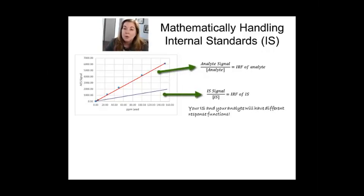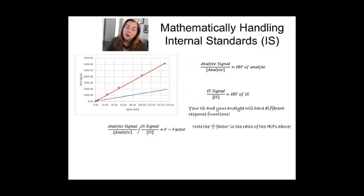Now, if you divide both of these equations, any one equation divided by another is going to also give you a true equality. You're going to get something like this. And what you can see is on the right hand side, there's something that I call the F factor, which is the ratio of the instrument response functions of both the internal standard and the analyte. And that ratio is a fixed number.